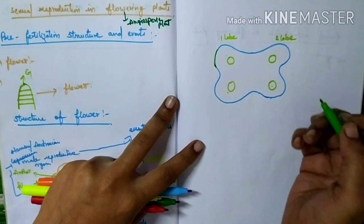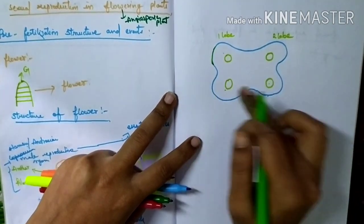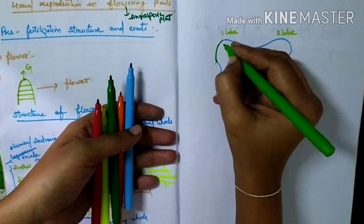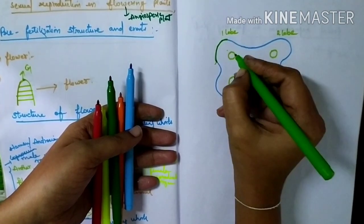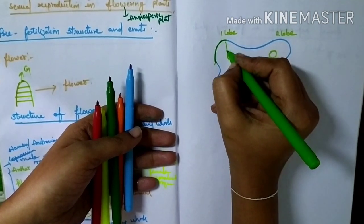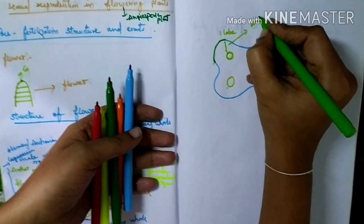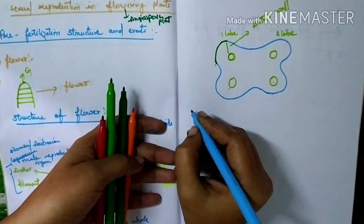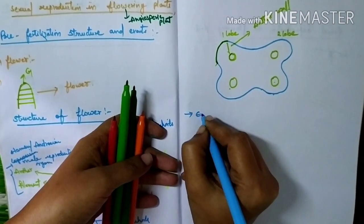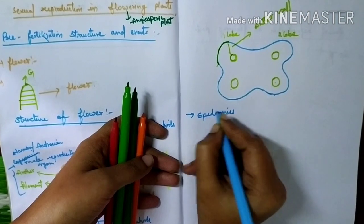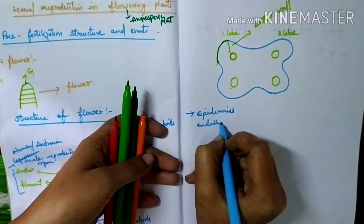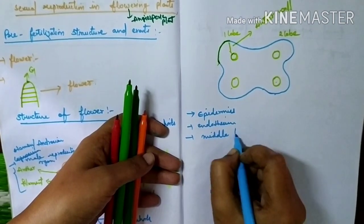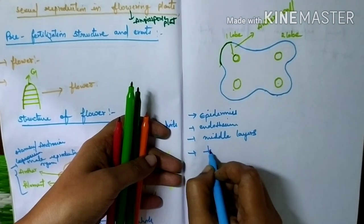Looking at the structure of the anther, it consists of four microsporangia at the corners. The outermost layer of the microsporangia is called the epidermis. The space between the outer structure and the microsporangia is called the anther wall. The anther wall has four layers: epidermis, endothecium, middle layers, and tapetum.